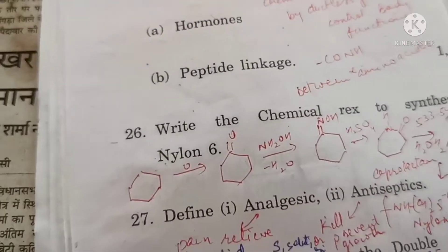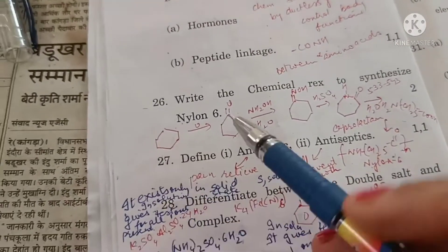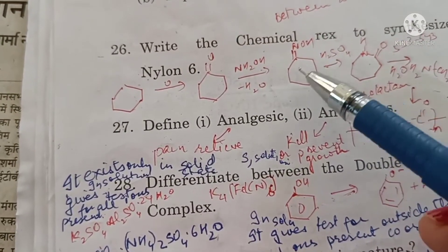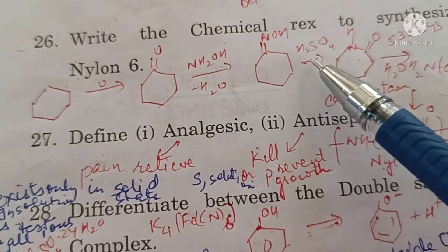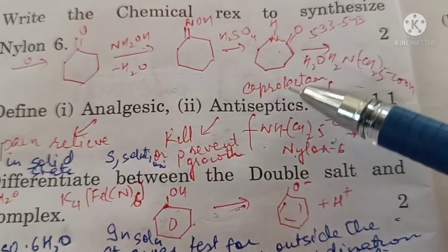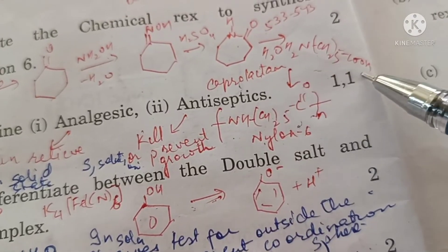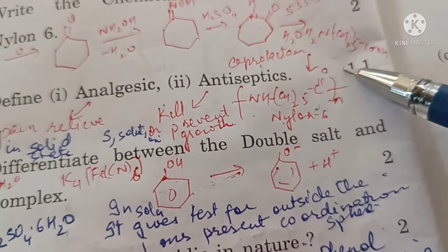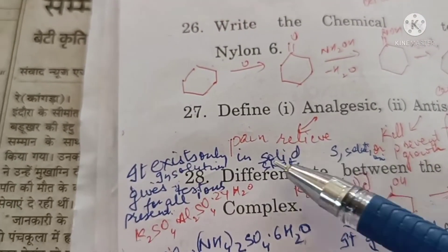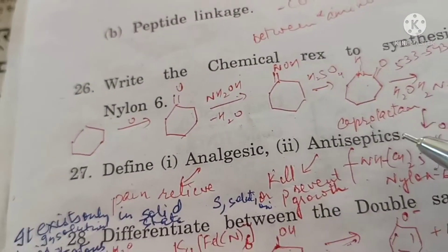Write the chemical reaction to synthesize Nylon-6. It is formed from cyclohexane, which on oxidation forms cyclohexanone. On reaction with hydroxylamine it forms cyclohexanone oxime. On heating with sulfuric acid we get caprolactam, which at high temperature opens up to form an amino acid, and on polymerization forms Nylon-6.